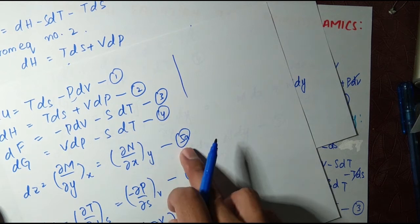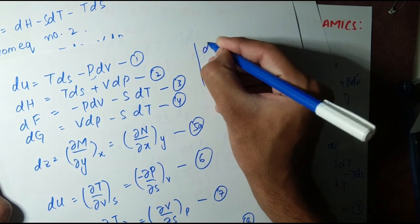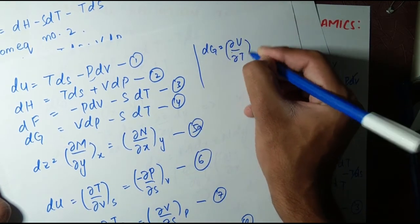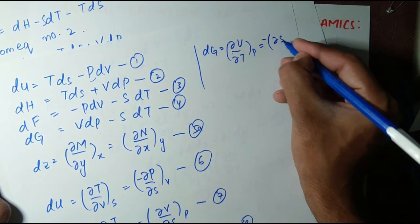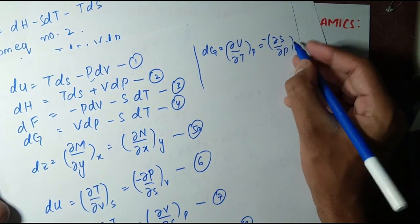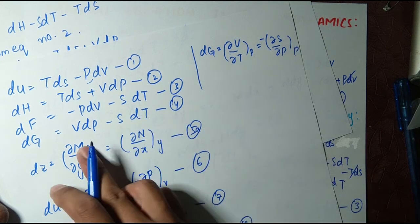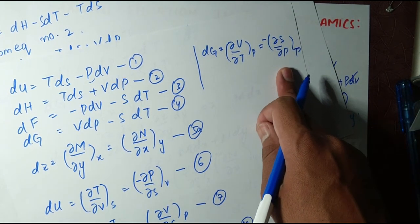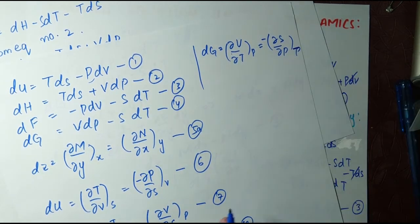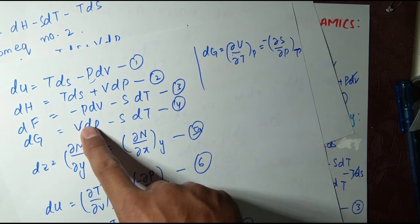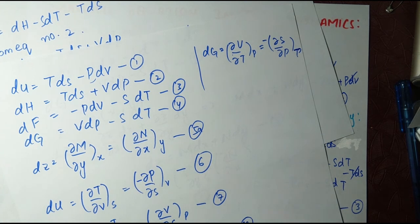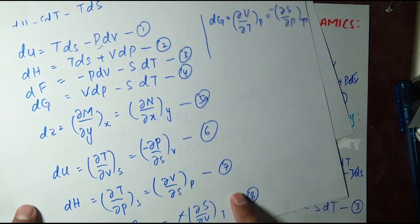Comparing equation five with equation four (dG = V dP − S dT) gives the fourth Maxwell relation: ∂V/∂T at constant P equals −∂S/∂P at constant T. This is equation number nine.